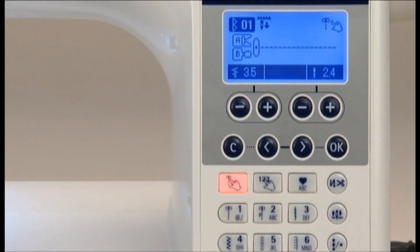Press the automatic lock switch and thread trimming button. The automatic lock stitch and thread trimming icon will appear on the screen. Press the button again and it will disable the automatic lock stitch feature.